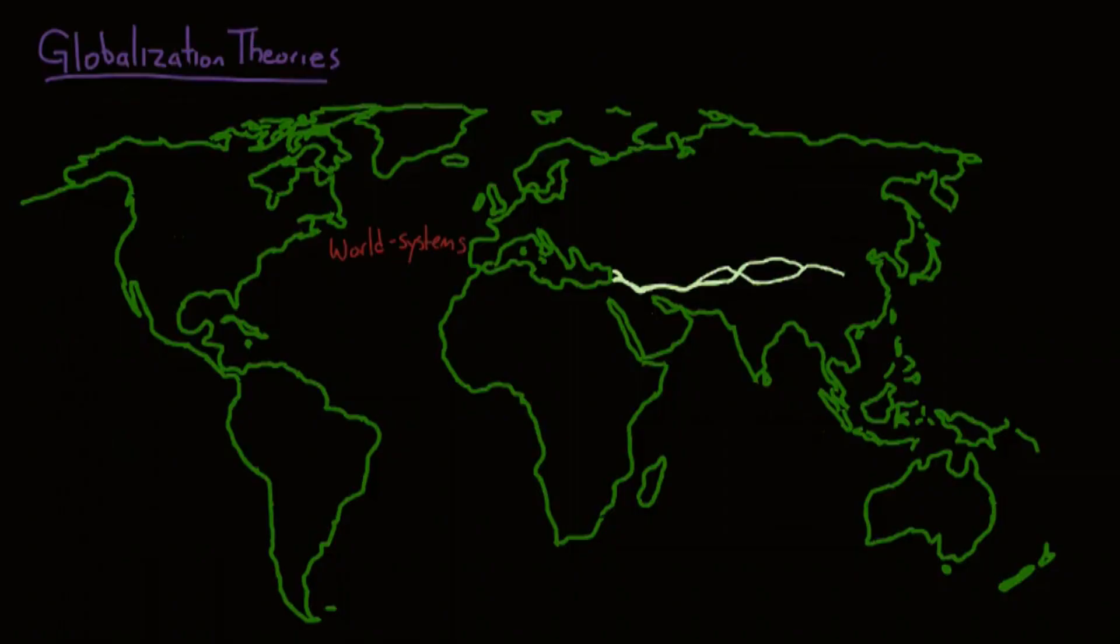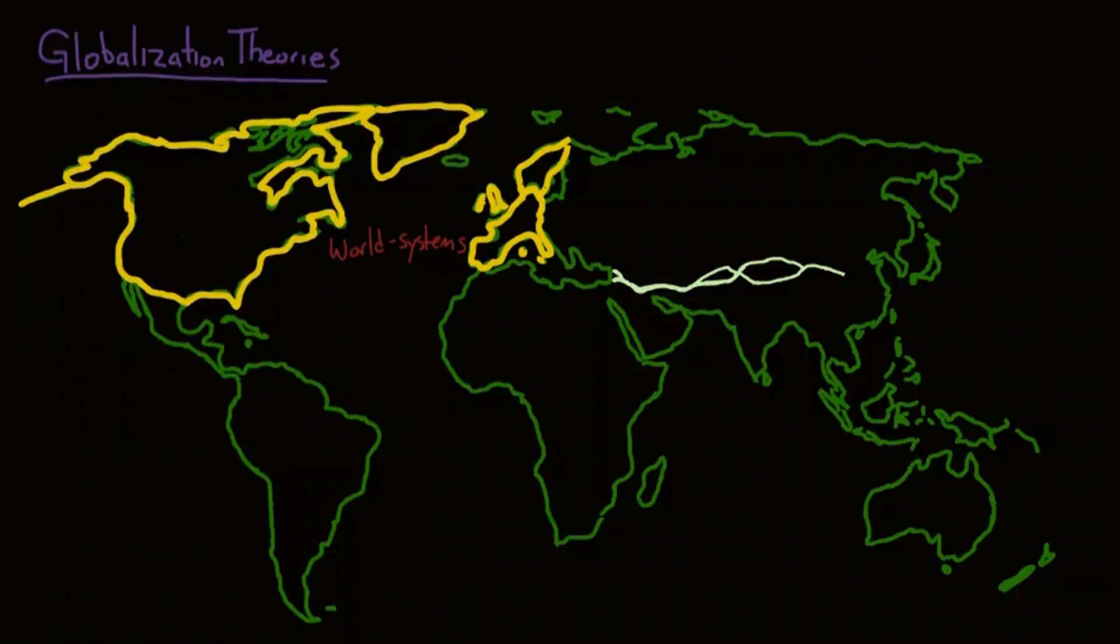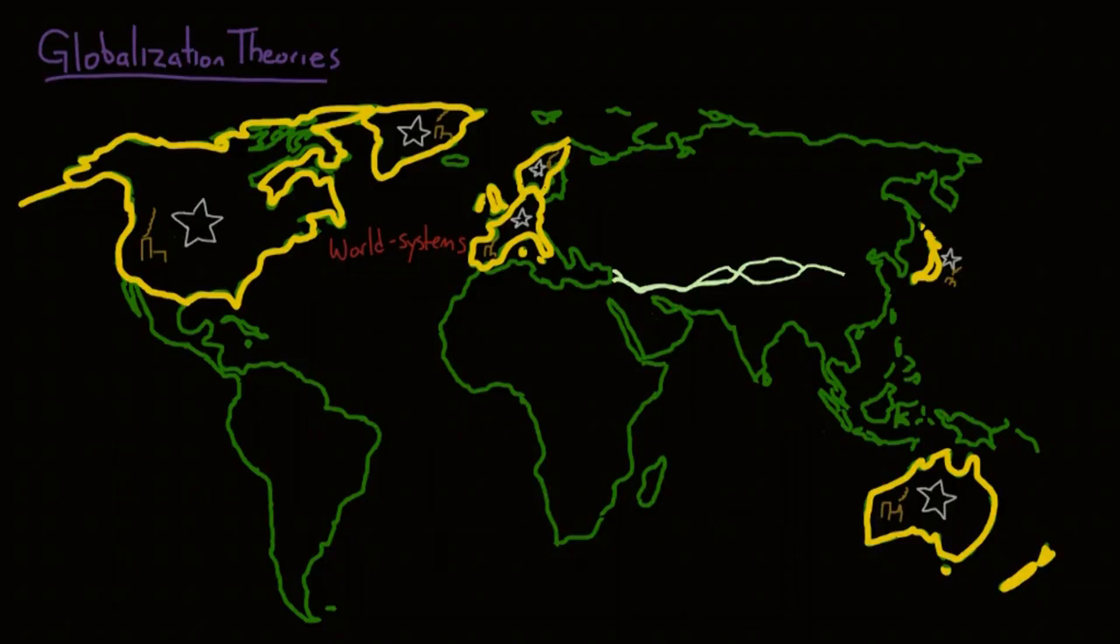It divides the world into three regions: core countries, periphery countries, and semi-periphery countries. Core countries include areas like Western Europe and the United States. These countries have a strong central government with enough tax to support it. They are economically diversified, industrialized, and relatively independent of outside control. They have strong middle and working classes and focus on higher skill production of material goods rather than raw materials.